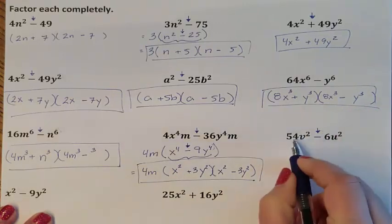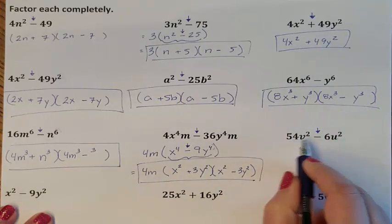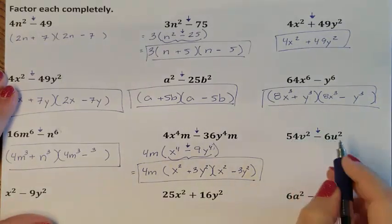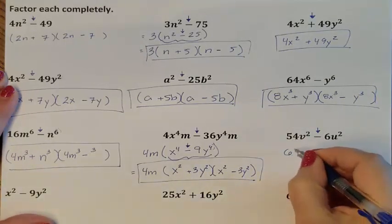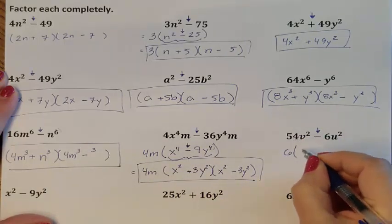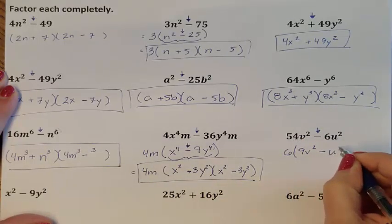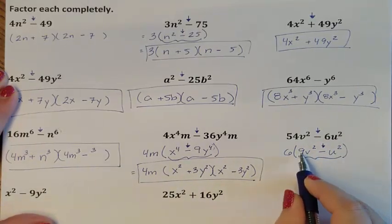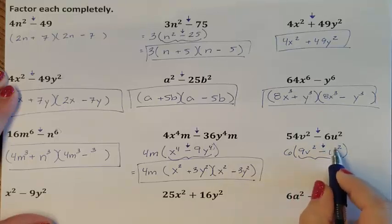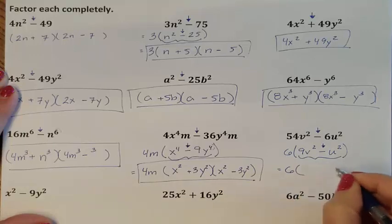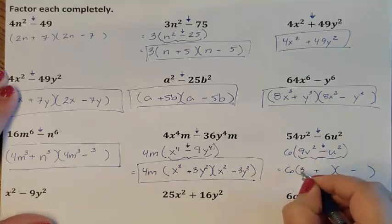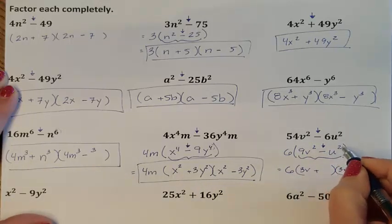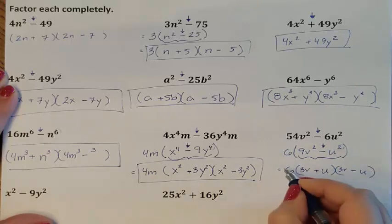This is a subtraction problem. Can I square root 54? No. Can I divide 54 by 6? I can. So 54 and 6 both have a GCF of 6. If I factored out a 6 and divided both by 6, I would have 9v squared minus u squared. Now can I do the difference of two squares? It is a difference. I can square root 9. I can divide the v's exponent by 2, and I can divide the u's exponent by 2. So here's my GCF of 6, and my two parentheses. The square root of 9 is 3. The v's exponent divided by 2 is 1, so my front terms are 3v's. Dividing the u's exponent by 2 gives u to the 1. So this is my factored form.